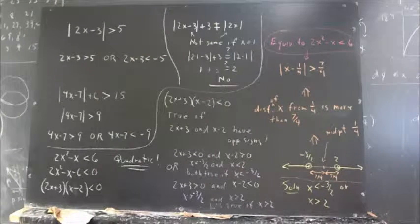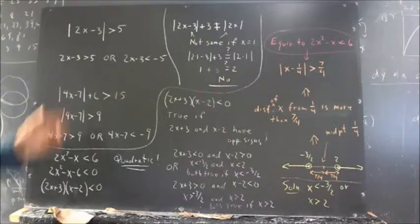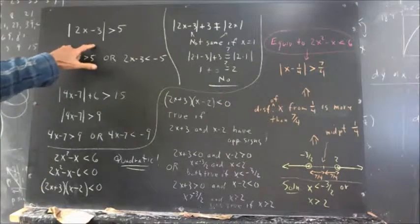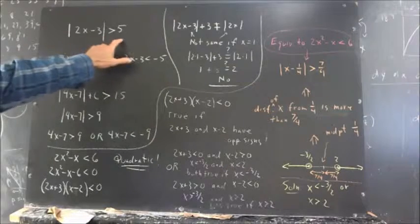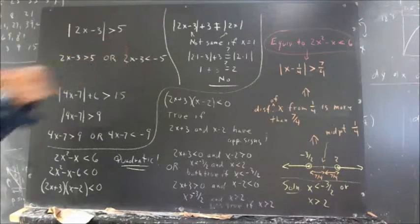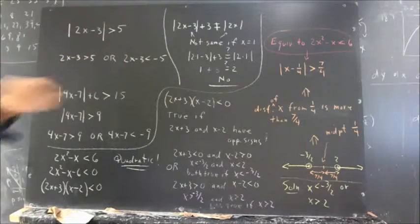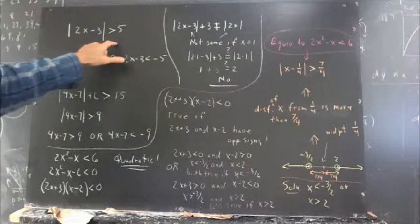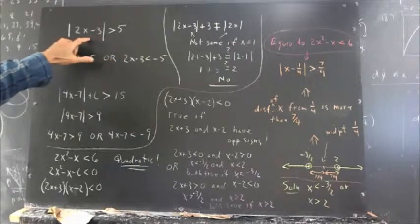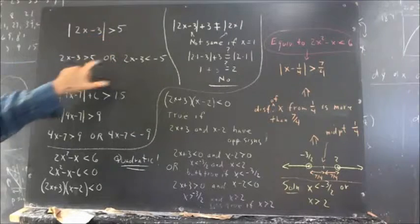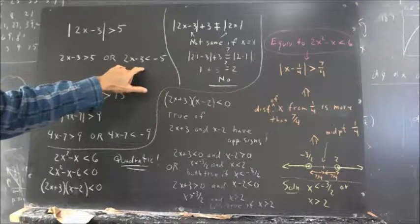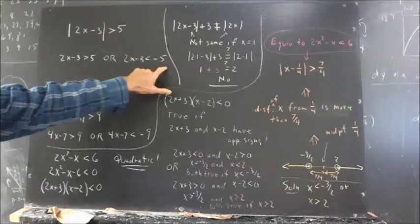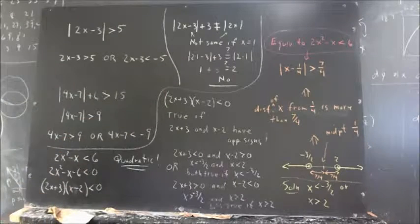Some comments related to your homework. Absolute value of 2x minus 3 greater than 5 — what does this mean? This means that either 2x minus 3 is greater than 5, or 2x minus 3 is less than negative 5.